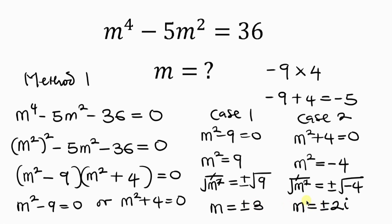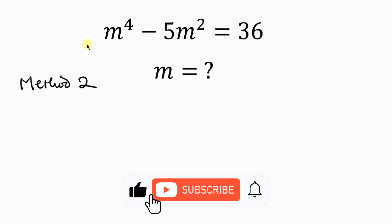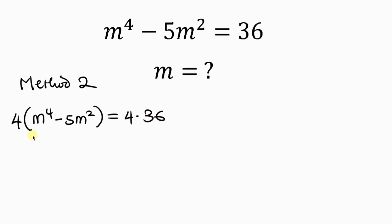Now let's move on to method 2. For method 2, I'm going to be using the completing the square method, because I want to turn the left-hand side into a perfect square. In order to do that, the coefficient of m to the fourth must be a perfect square. So I'll use 4 to multiply both sides. Opening up the brackets: 4 times m to the fourth is 4m to the fourth, minus 4 times 5m squared is 20m squared, and this equals 4 times 36 which is 144.